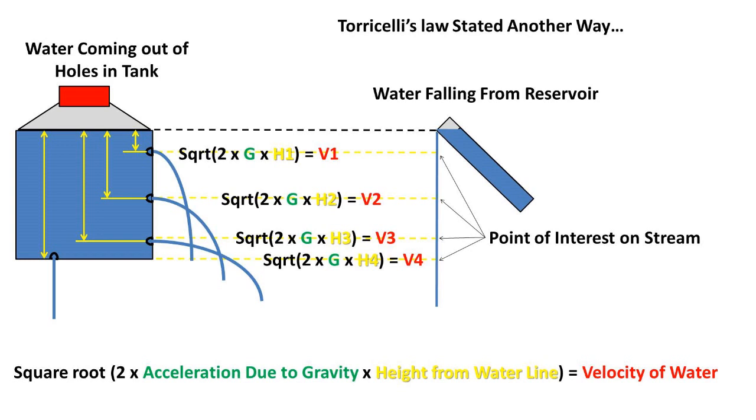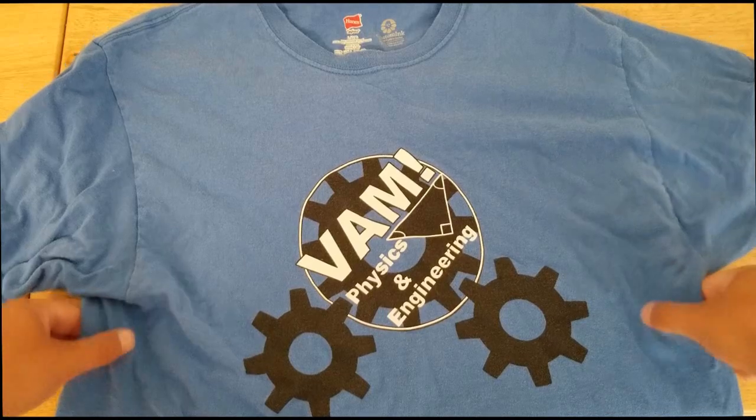The velocity of water coming out of the holes, or falling out of the reservoir, is represented by the formula square root of 2 times gravity times the vertical height from the waterline to the centerline of the hole, or waterline to the point of interest on the stream, which is simply the projectile motion velocity equation for a free-falling object. That concludes this video.